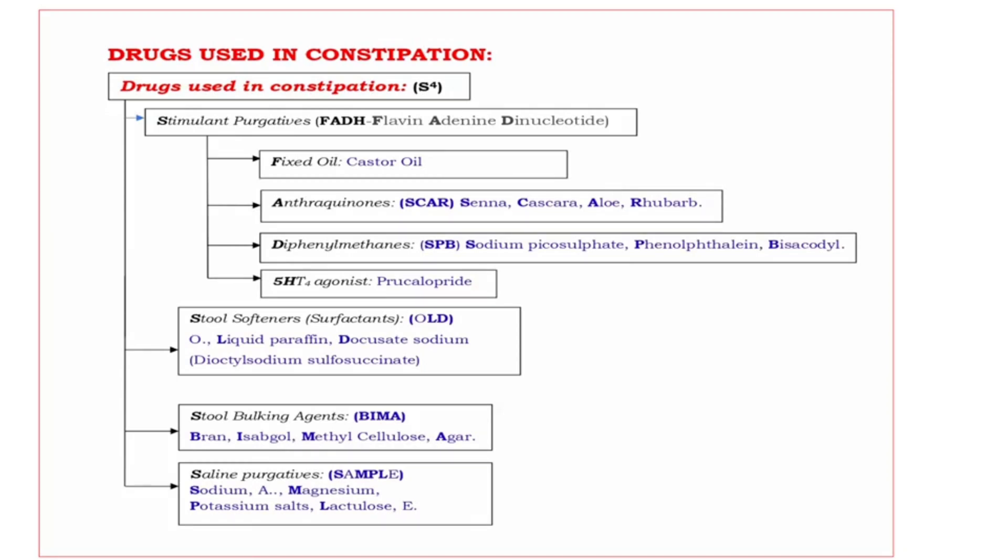Classification of drugs used in constipation. A mnemonic is given: yes to the power of four, means four yes. First yes, stimulant purgatives. Second yes, stool softeners. Third yes, stool bulking agents. Fourth yes, saline purgatives.